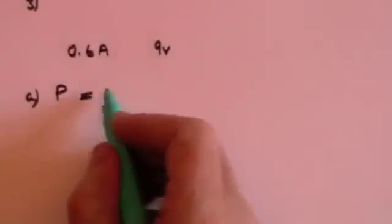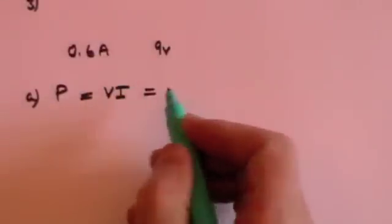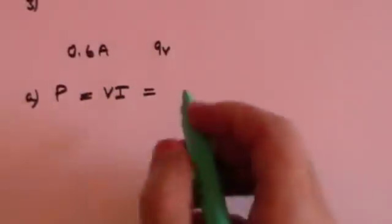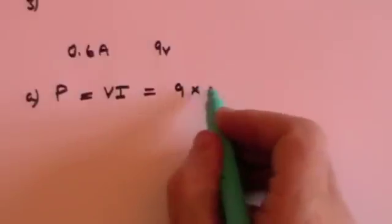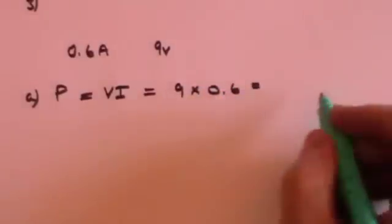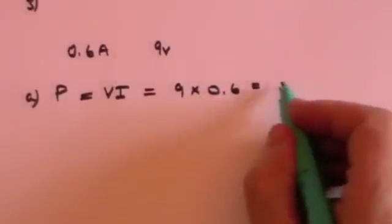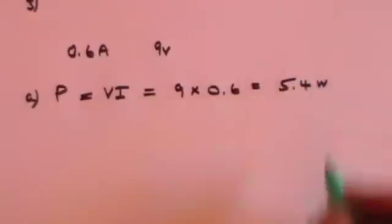Well power is equal to voltage times current and we've got both so that's pretty simple. The voltage is 9, the current is 0.6 and that's going to give you 5.4 watts so the torch has a power of 5.4 watts.